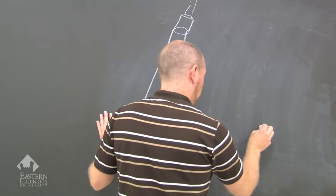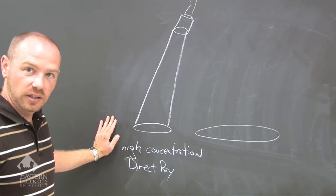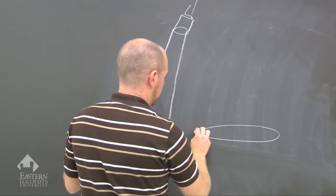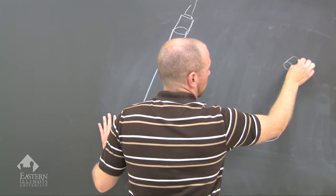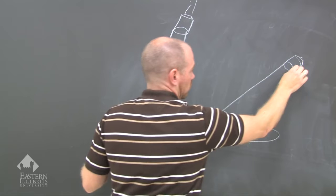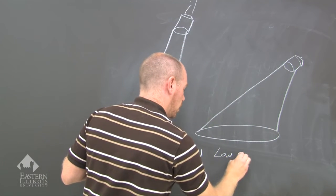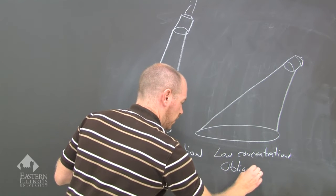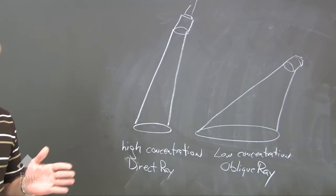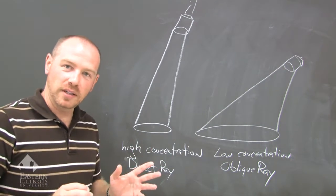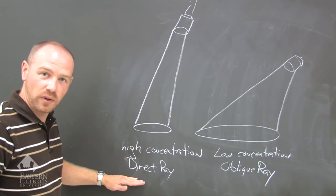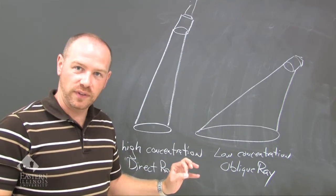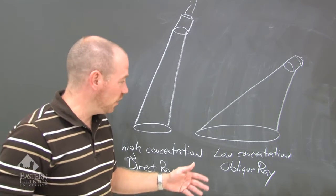On the opposite side of that, we get an elongated area of energy on the floor — it's like pointing the flashlight about 10 feet in front of you. What happens is you get a lower angle and a low concentration of energy. This is what we call the oblique ray of the Sun. Remember those parallels? The direct ray only occurs between 23.5 degrees north and 23.5 degrees south. Everything north or south of that is going to be the oblique ray.